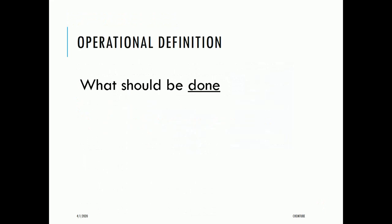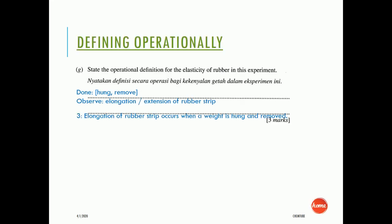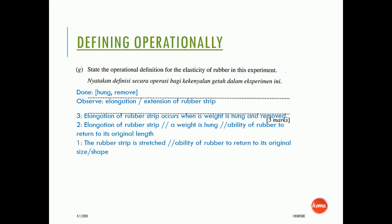For the operational definition, the student needs to specify what should be done and what should be observed. Score 3: 'Elongation of rubber strip occurs when a weight is hung and removed.' Score 2: 'Elongation of rubber strip' or 'ability of the rubber to return to its original length.' Score 1: 'The rubber strip is stretched' or 'ability of the rubber to return to its original size or shape.'